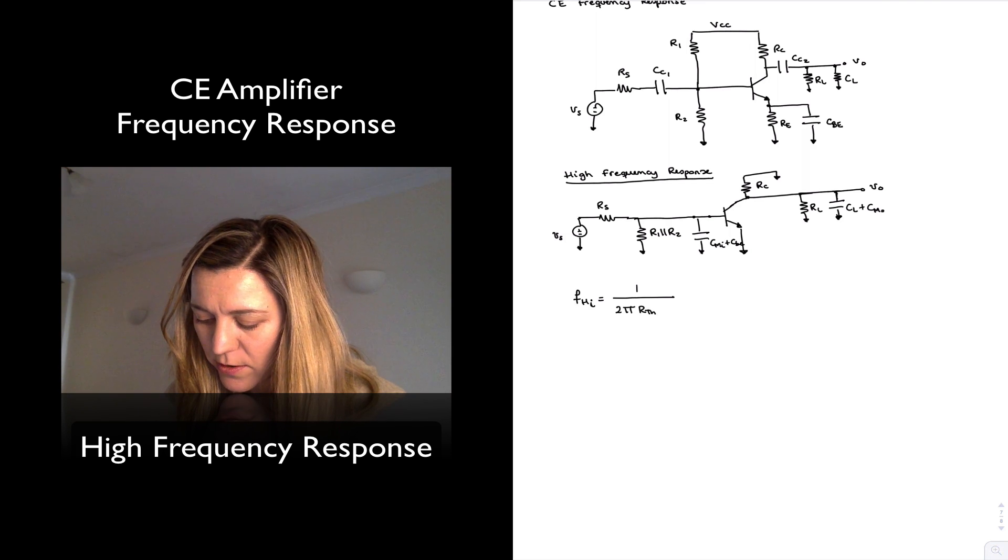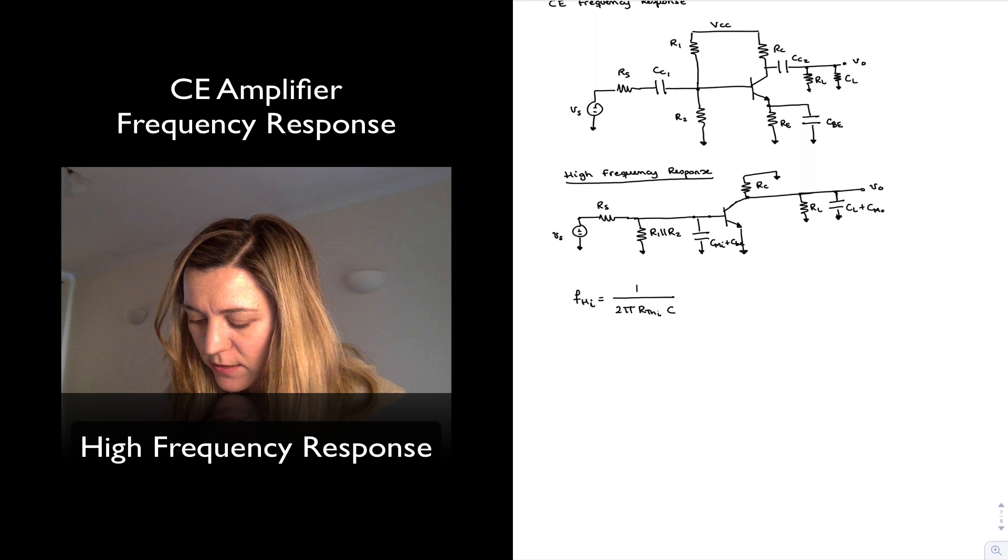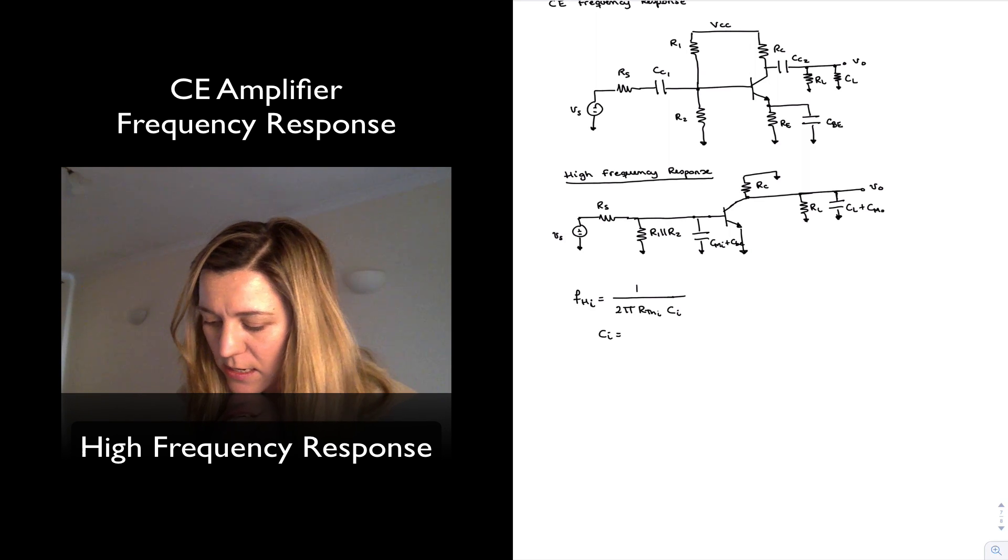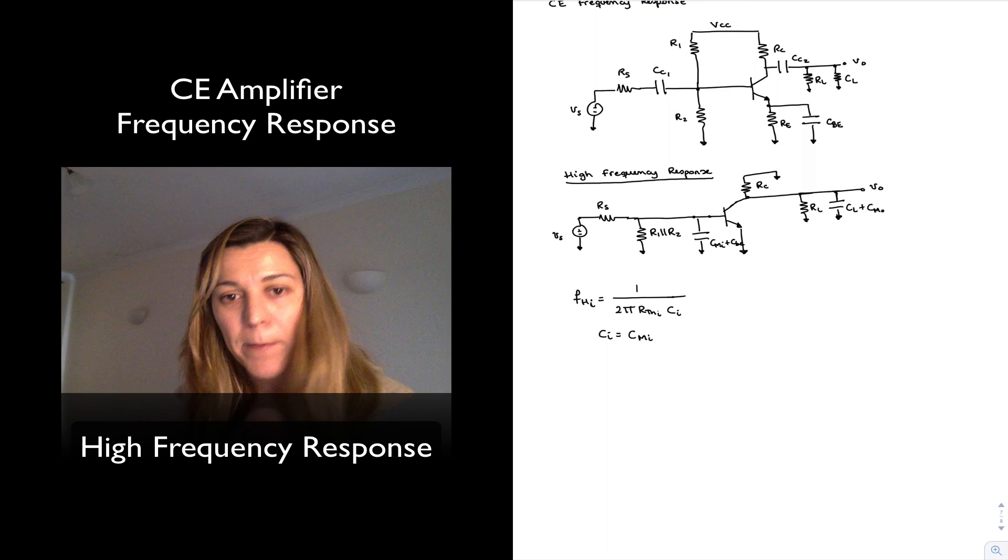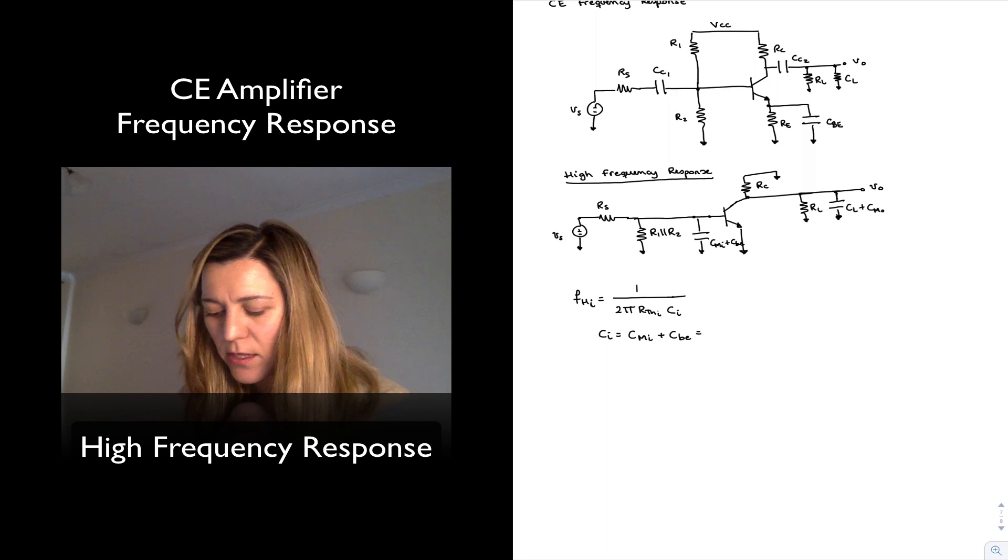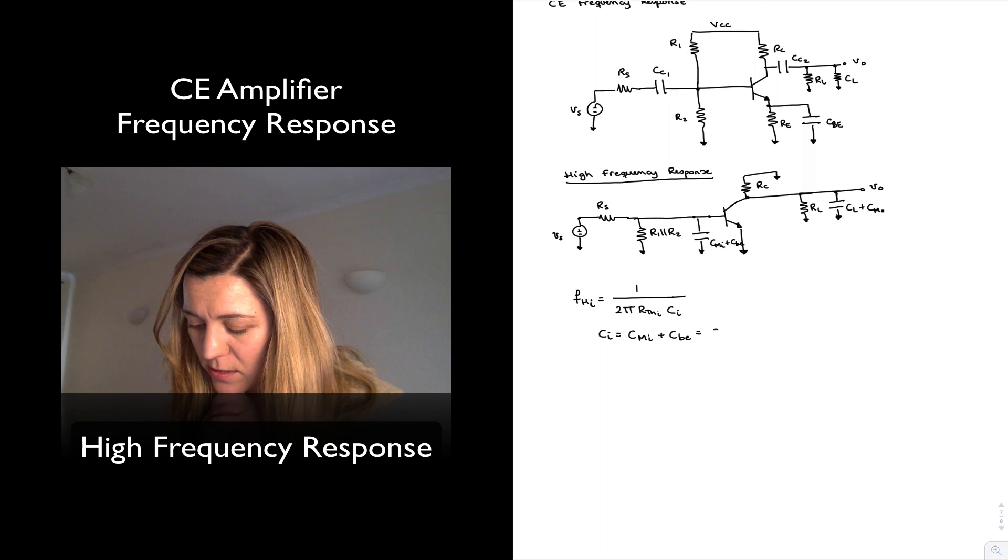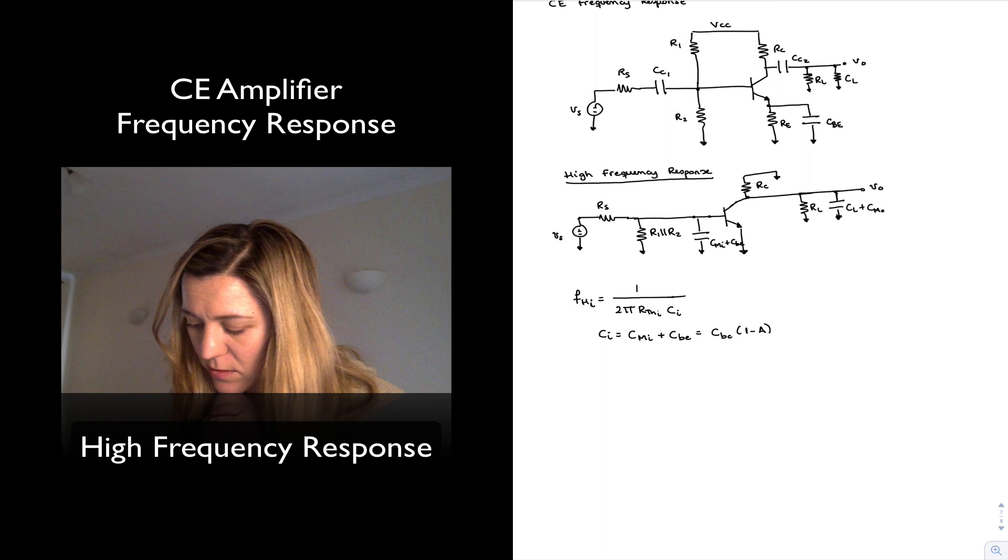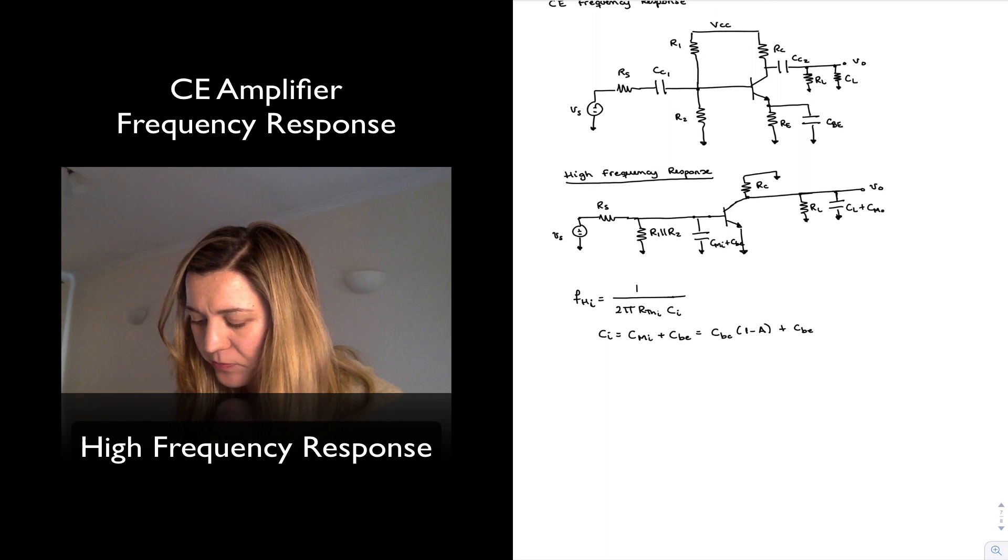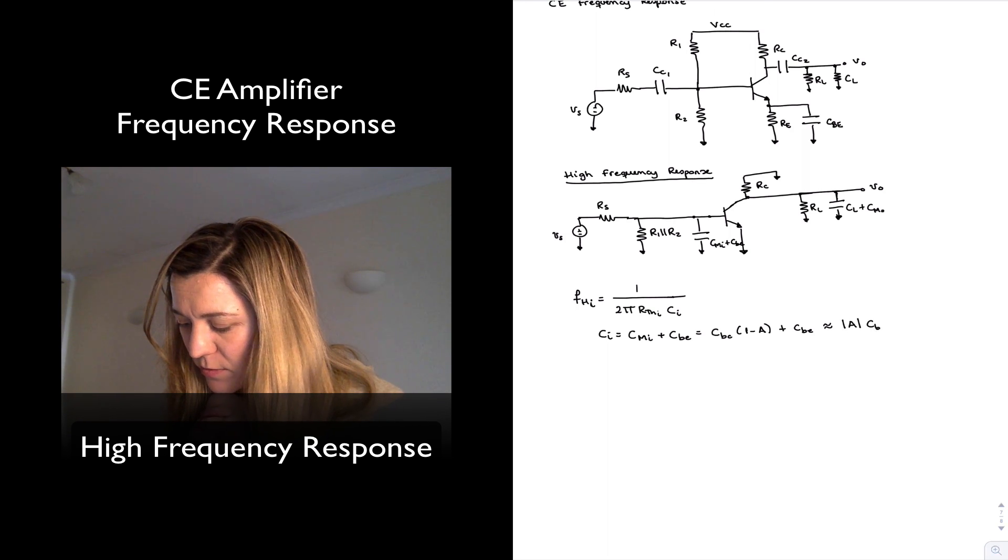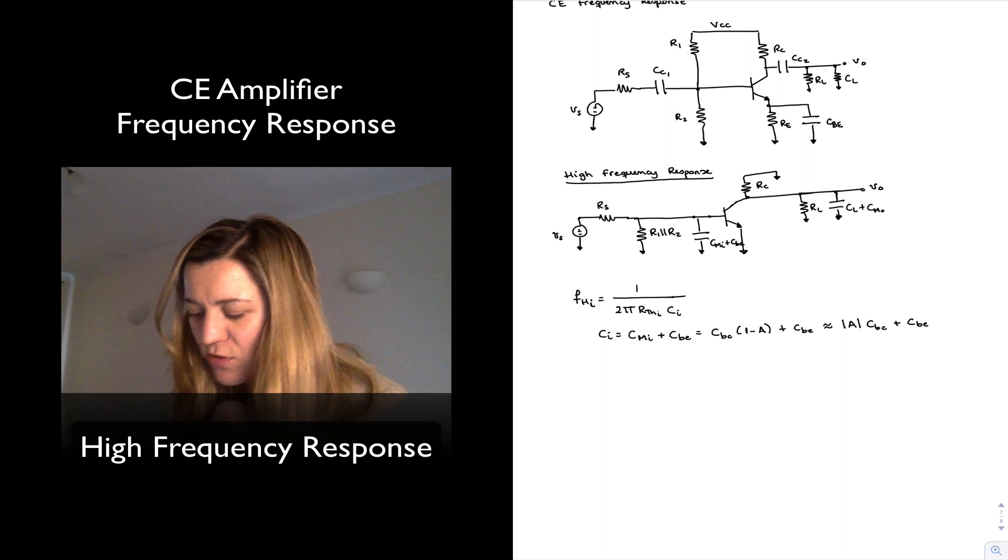This is going to be equal to 1 divided by 2pi, R7i, I will call it, CI for C input capacitance. What I have already determined is that my input capacitance is the sum of the Miller input capacitance and CBE. And the Miller input capacitance is going to be equal to CBC times 1 minus A, approximately equal to the absolute value of the gain times CBC plus CBE. And the reason for that is the gain for a common emitter amplifier is typically much larger than 1.